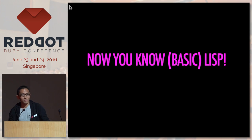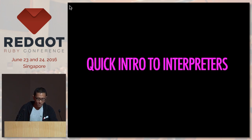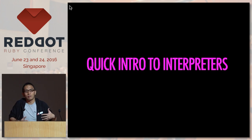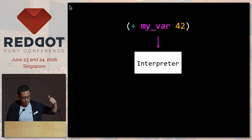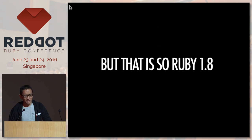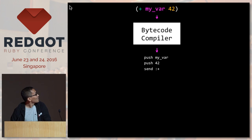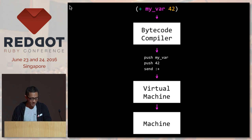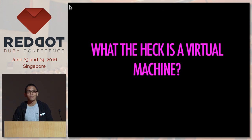Now a very quick introduction to interpreters. An interpreter takes code, and it evaluates directly on a machine. But that's Ruby 1.8 — we're no longer doing that. What we're going to do is take the code, compile it to bytecode, and run it on a virtual machine, so that it's evaluated on the real machine.